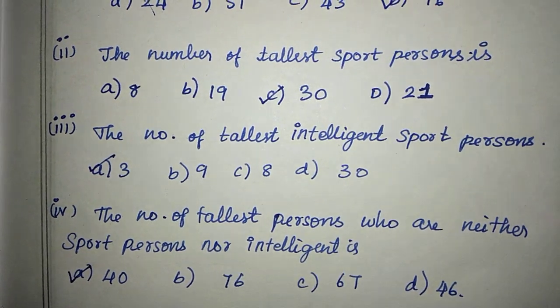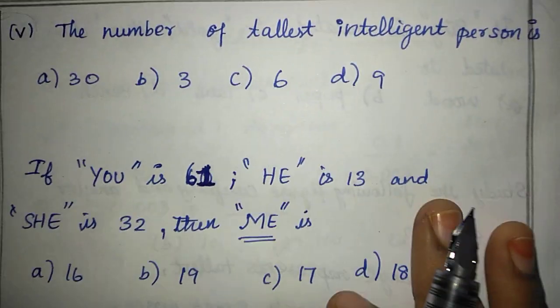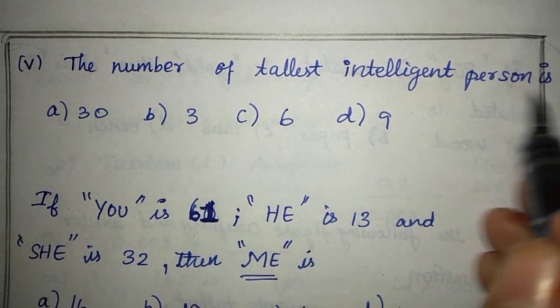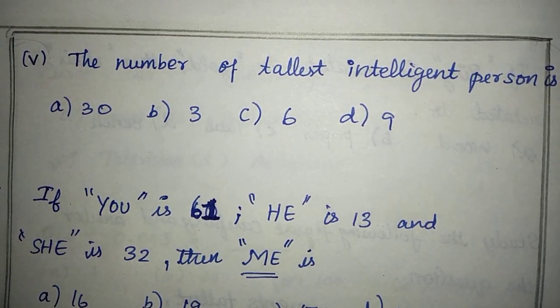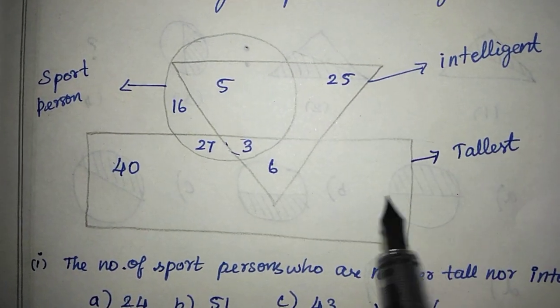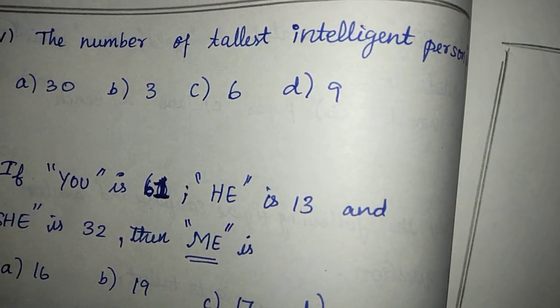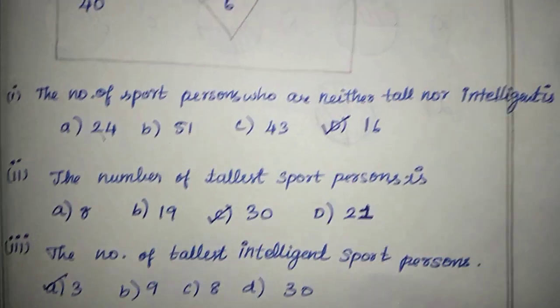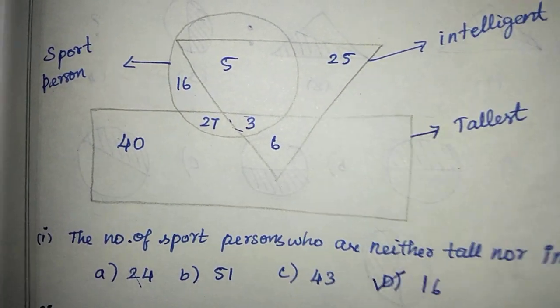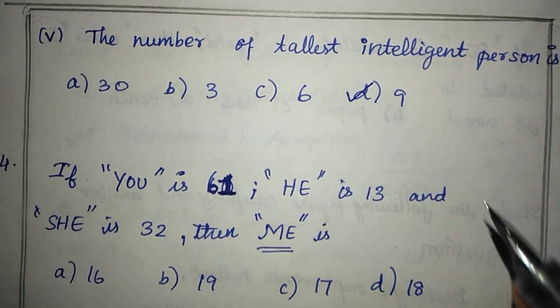Next: the number of tallest intelligent persons. We will call it the tallest intelligent person — the tallest and intelligent person. The options are 30, 3, 6 and 9. So 9 is the right answer. Option D, 9 is the right answer.